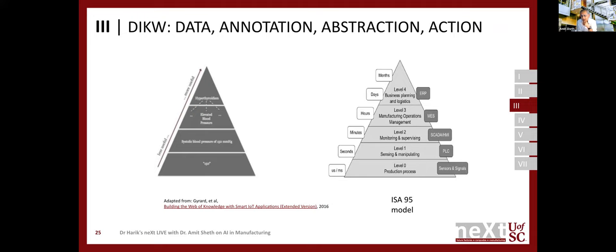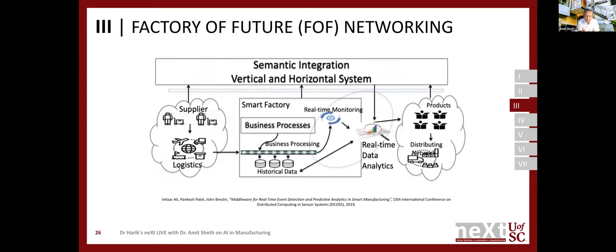In manufacturing, there is the ISA 95 model which captures different levels, starting with sensor signals and going up through manufacturing systems to ERP. For networking, you also need to worry about horizontal networking — for example, with suppliers or customers. Your factory talks to customers, suppliers, and other providers, and you need to worry about interoperability across that as well. So there is both vertical networking — from device level to edge, fog, and cloud — and horizontal networking across the supply chain.